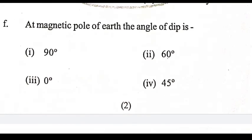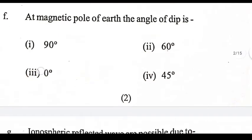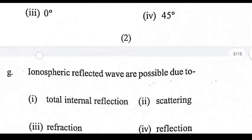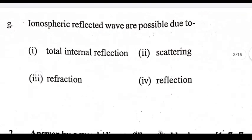At the magnetic pole of the Earth, the angle of dip is — fill in the blank. This question is for your Term 2 and board exam. Next: ionospheric reflected waves are possible due to — fill in the blank.